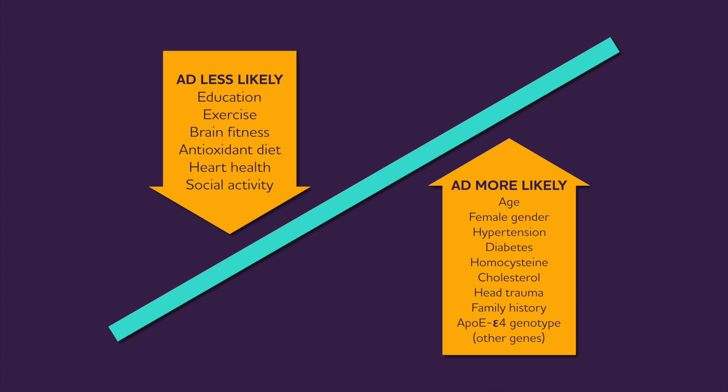On the left-hand side of the screen, you'll see things that may significantly reduce the risk of Alzheimer's disease, such as education, exercise, brain fitness, an antioxidant diet like the Mediterranean-style diet, heart health, and social activity. On the right-hand side, we've discussed things that put us at greater risk — age is the greatest risk factor, women are more susceptible than men, heart health and diabetes are key, and head traumas, family history, and genetics play a significant role. All of these make up the Alzheimer's profile for your patient.